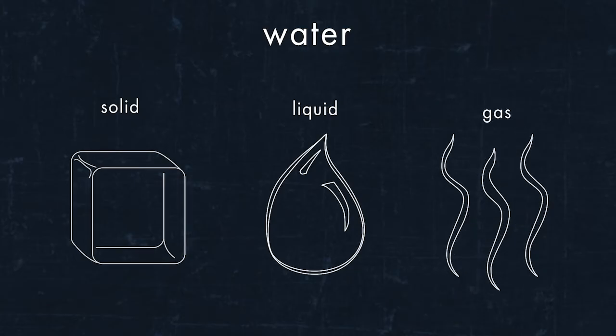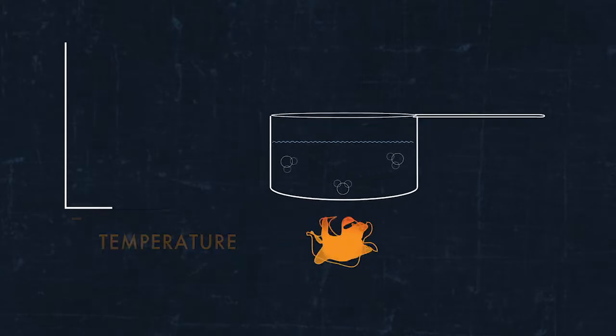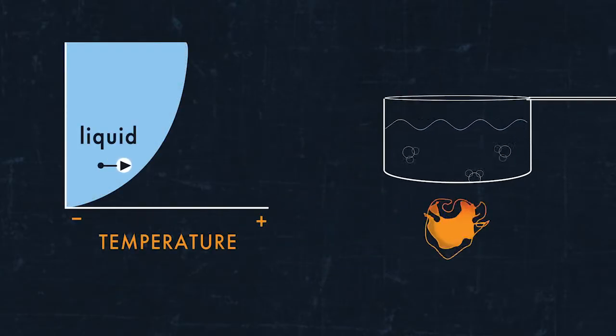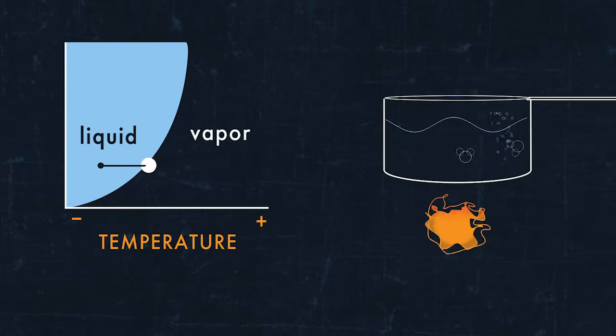We typically associate the different phases with temperature. For example, we put a pot of liquid water on the stove and add heat to increase its temperature until it boils. Water boils when a water molecule crosses the phase boundary and becomes steam or vapor.